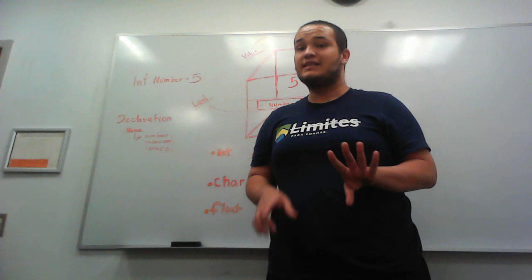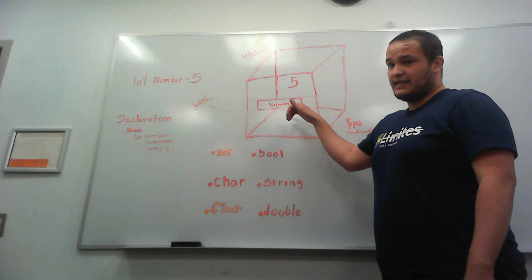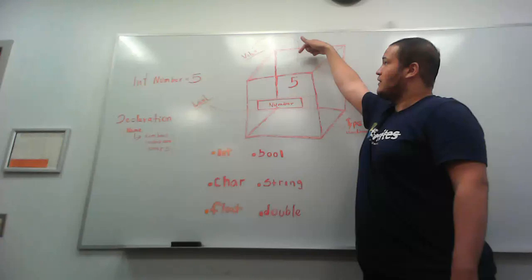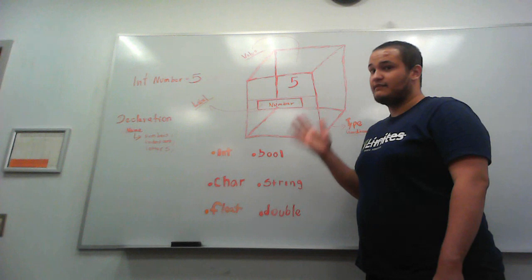I always like to use the box analogy. So you see this box here, it has a label, which in this case is number, it also has a type, which in this case is cardboard, and it has a value, which is what is inside of it. The number five.